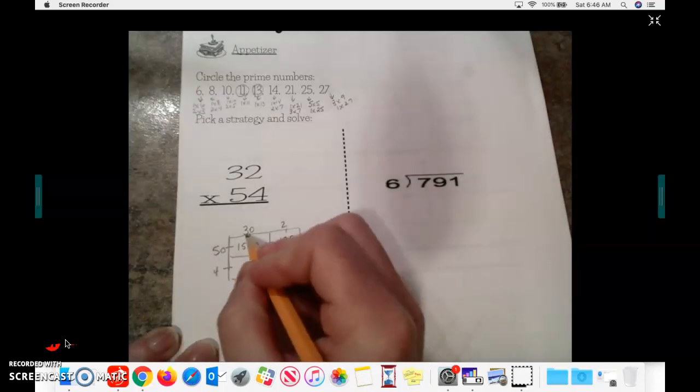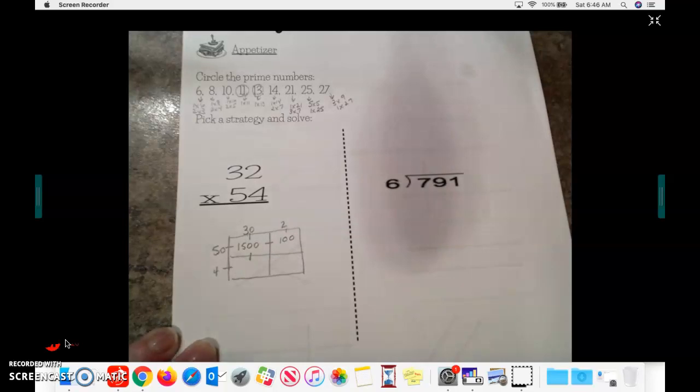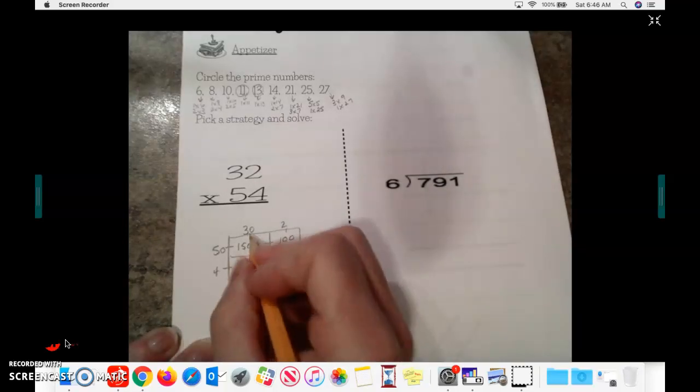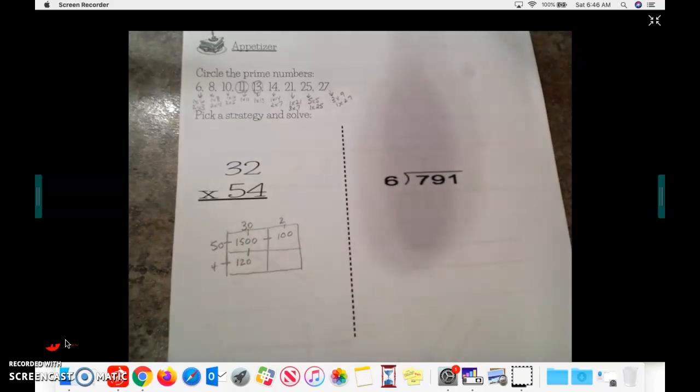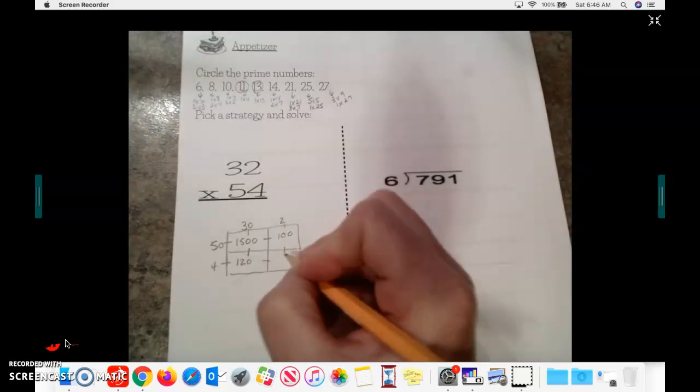Then I have 30 times 4. 3 times 4, I can find that on my multiplication chart, is 12. And then I have one zero there, so it makes it 120. And then 2 times 4 is 8.